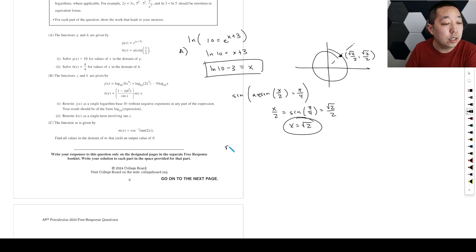Part B, the functions j and k are given by this. Rewrite j as a single log base 10 without negative exponents in any part of the expression. So first step is whenever I add logs, I get to multiply them on the inside. So it's going to be 8x to the 5th times 2x squared. And then whenever I subtract anything, I get to put on the denominator. But I got to get rid of this 9. And so minus 9, I can bring the 9 inside and make that x to the 9th.